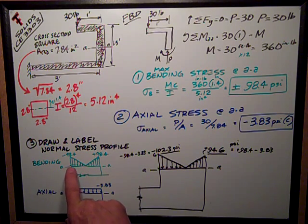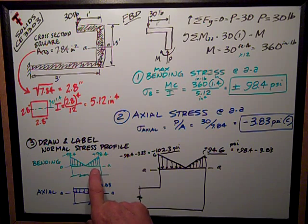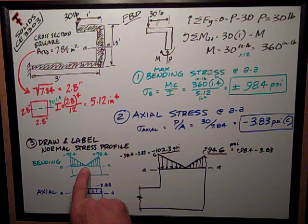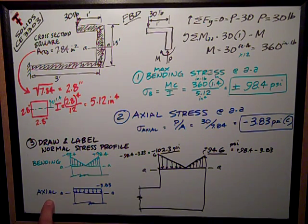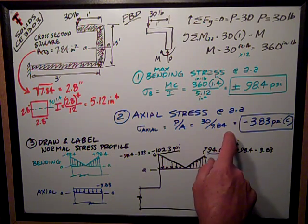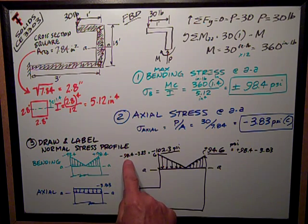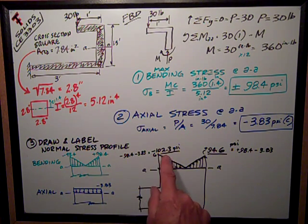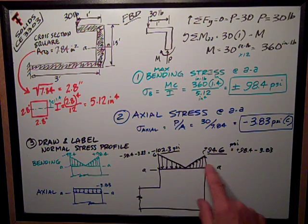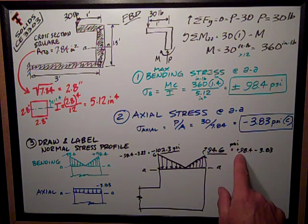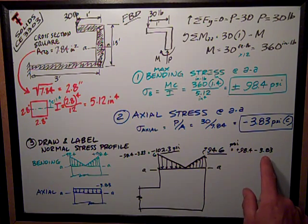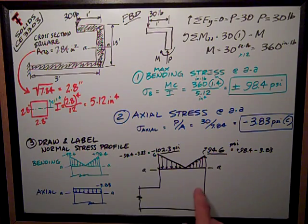So the bending stresses look like this with compression 98.4, negative 98.4 psi on this side, tension on this side varying down to nothing at the neutral axis. It's superimposed with the axial stress, which was uniform over the entire cross-section of negative 3.83. So it adds to the compression on this side. So the compression on this side is negative 98.4 minus 3.83, just doing it algebraically, it's negative 102.23 psi on this side varying down to nothing at the new neutral axis. On this side it's 98.4 tension positive minus 3.83 compression from the axial stress is equal to 94.6. So that's what I wanted to see there.